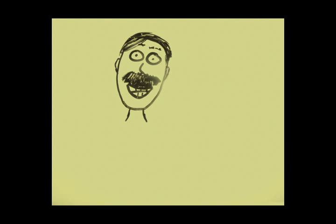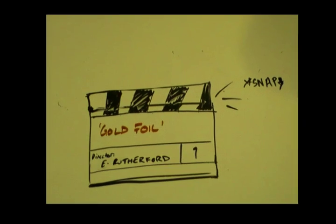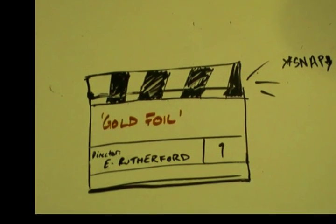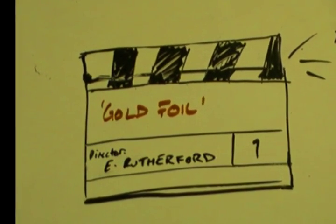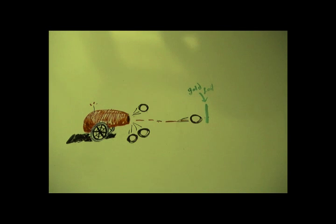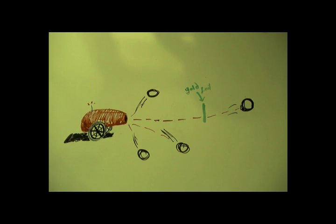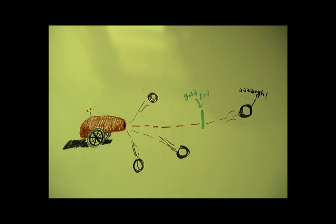In 1909, Ernest Rutherford designed and directed an experiment that would reveal the true structure of the atom, in what was called the gold foil experiment. Simple but ingenious, this involved firing radioactive alpha particles at a sheet of thin gold foil.